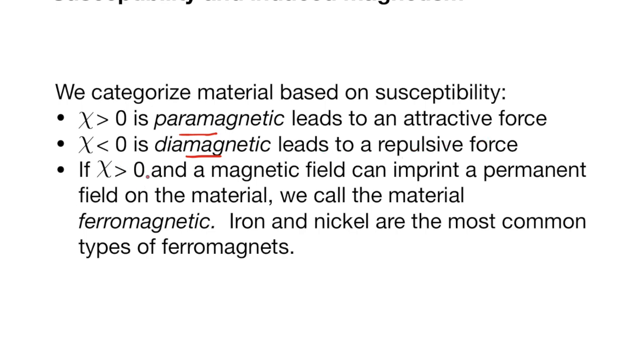And if χ is greater than zero and that magnetic field will implant and imprint a permanent magnetic field on the material, we refer to that as ferromagnetic. And so the iron and nickel that I mentioned earlier are actually ferromagnets because if you stick them in a B field that's large enough, you can actually make magnets out of the iron and the nickel. And this is how they would make primitive compasses by finding a magnetized stone and inducing a permanent magnetic moment in, for example, an iron needle.